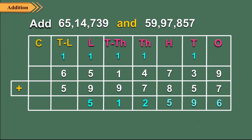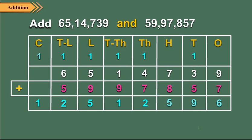Step 8: Now add the digits at the ten lakhs place. 1 ten lakh carried forward, plus 6 ten lakhs plus 5 ten lakhs is equal to 12 ten lakhs, which is equal to 1 crore plus 2 ten lakhs. So we write 2 in the ten lakhs column and 1 in the crores column. Therefore, 65,14,739 plus 59,97,857 is equal to 1 crore 25,12,596. We can add 8-digit numbers in the same manner.